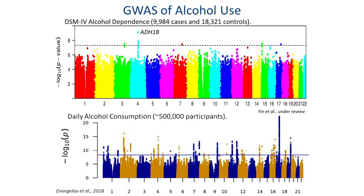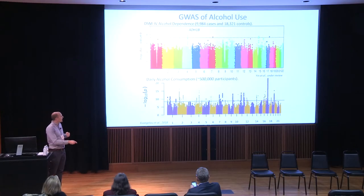If we look at larger samples — here we have daily alcohol consumption from a large study with 500,000 participants — you get something that actually starts to look like the Manhattan skyline, which is where the name comes from. We're identifying novel variants. This big peak here is the MAPT gene, the tau gene related to multiple neurodegenerative disorders, and on chromosome 11 you have DRD2 — a real redemption story for candidate genes.